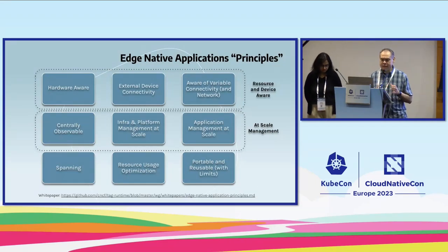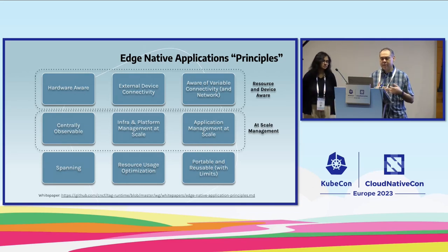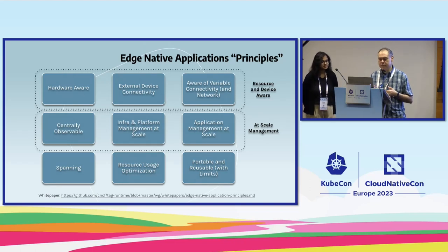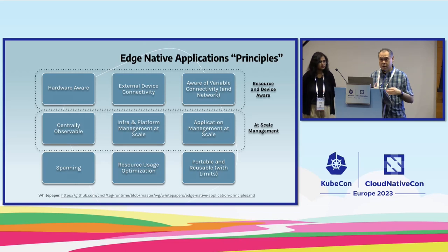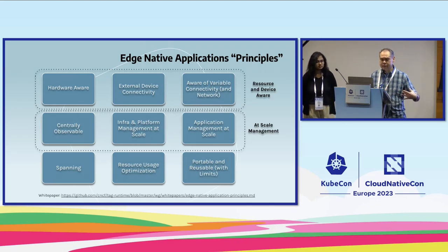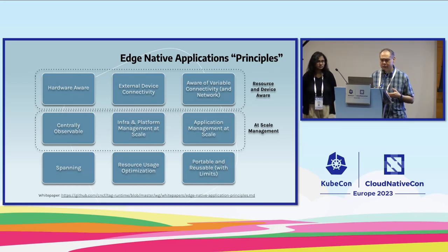The white paper also covers nine Edge Application Principles, mainly focused on awareness by applications of hardware, their location, and at-scale management. You may have hundreds or thousands of different edge devices that need to be aggregated into a central location. Projects like KubeEdge help with that, and these applications need to be aware of that context.